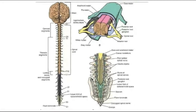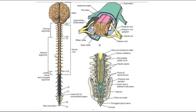In this diagram you can see the central nervous system, which includes the brain — with the cerebrum, cerebellum, and brain stem — and then the spinal cord. These different nerves coming from the spinal cord are called spinal nerves, which are part of our peripheral nervous system.